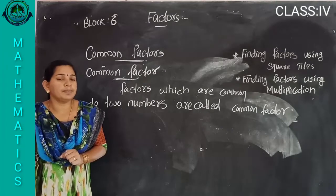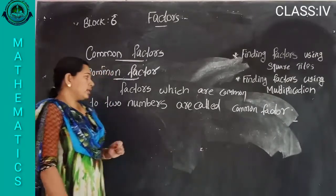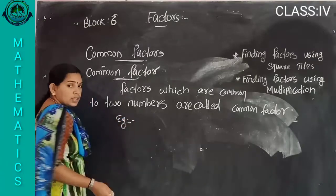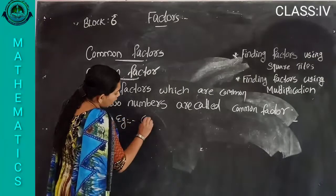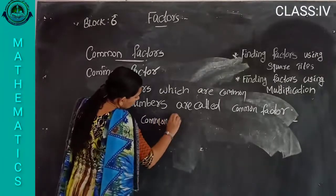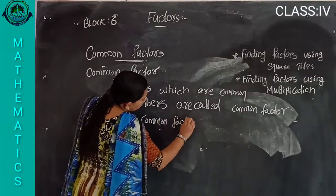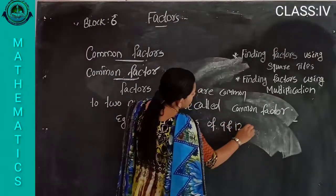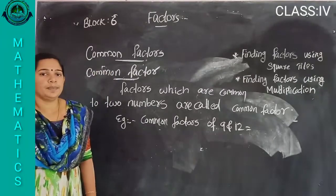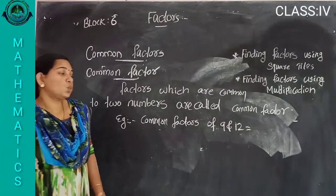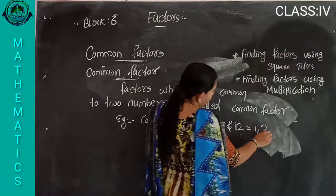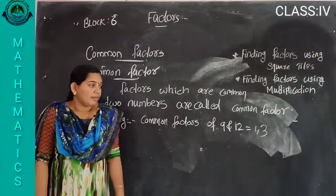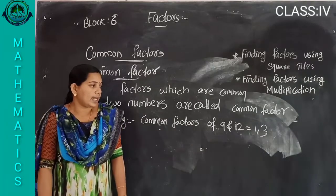We will do some problems. The example we did: the common factors of nine and twelve are one and three. One and three are the common factors of nine and twelve.